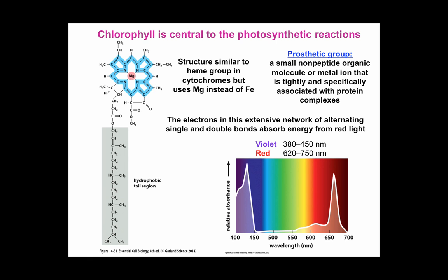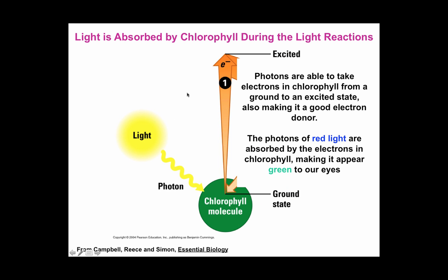Different chlorophylls cover the entire light spectrum, so they don't compete much for light energy when harnessing energy for photosynthesis. Light is composed of photons — small packets of energy — that are able to hit the electrons in the chlorophyll molecule. That bumps the electrons from a ground state to an excited state, making the chlorophyll molecule a good electron donor. At the ground state, the chlorophyll molecule is a very poor electron donor. Only when electrons have been energized by photons does the molecule become a good electron donor. Because chlorophyll is a fluorescent molecule that absorbs red light, we tend to see only the green light that is emitted, which is why plants look green to our eyes.